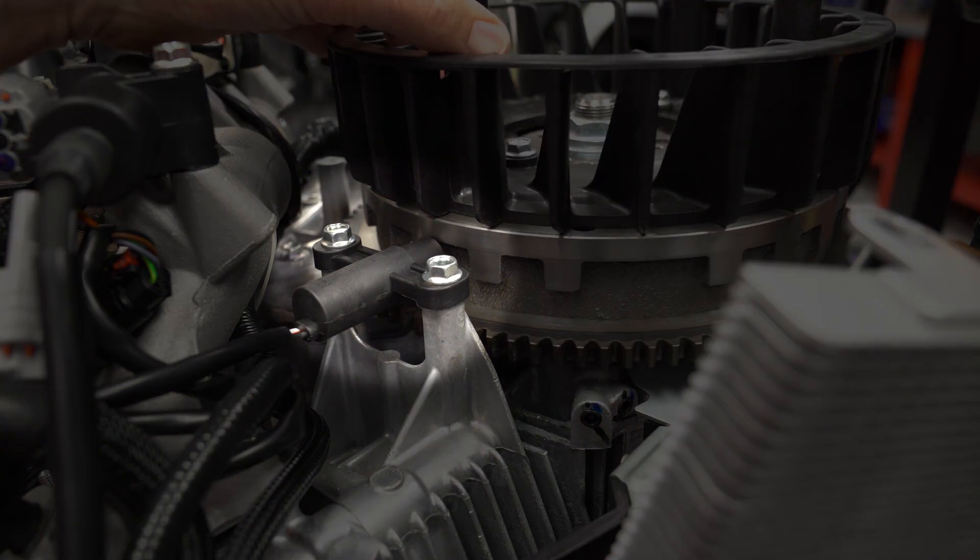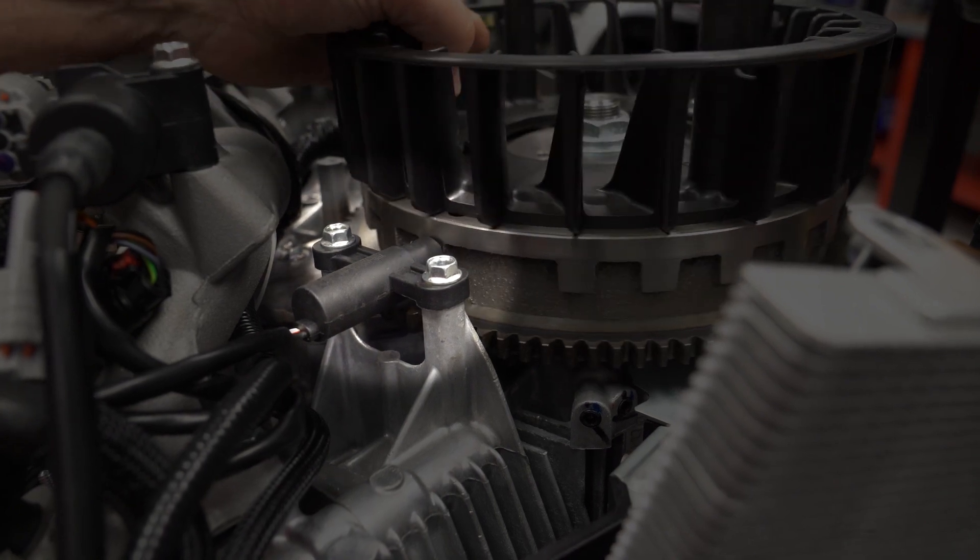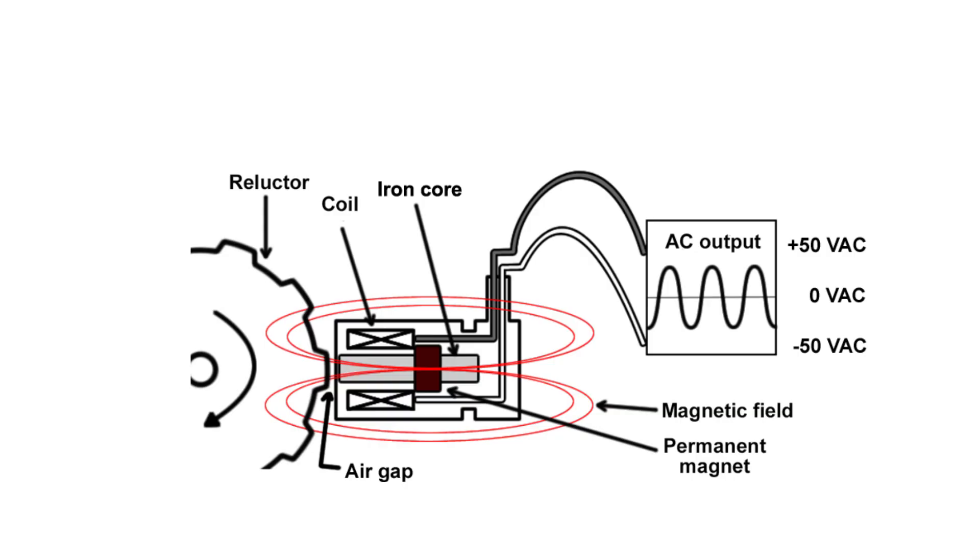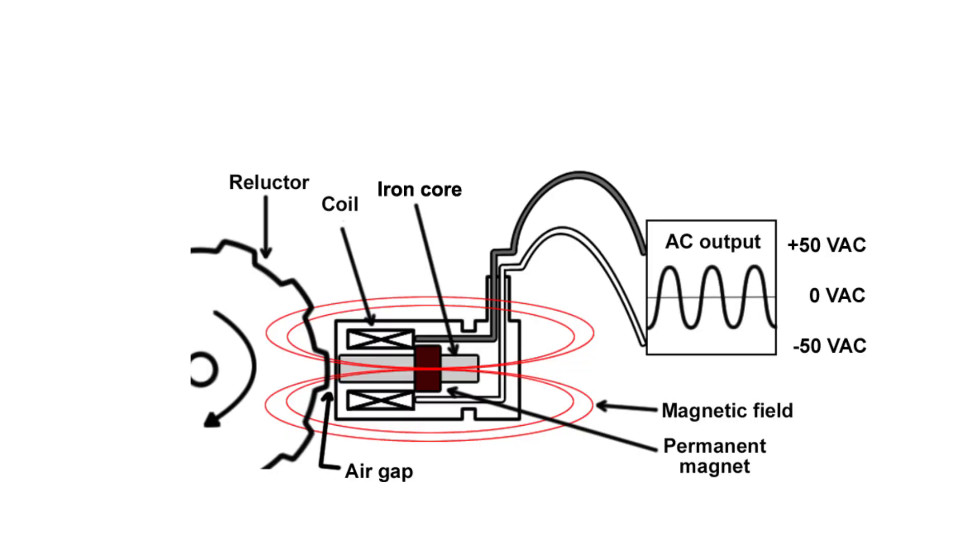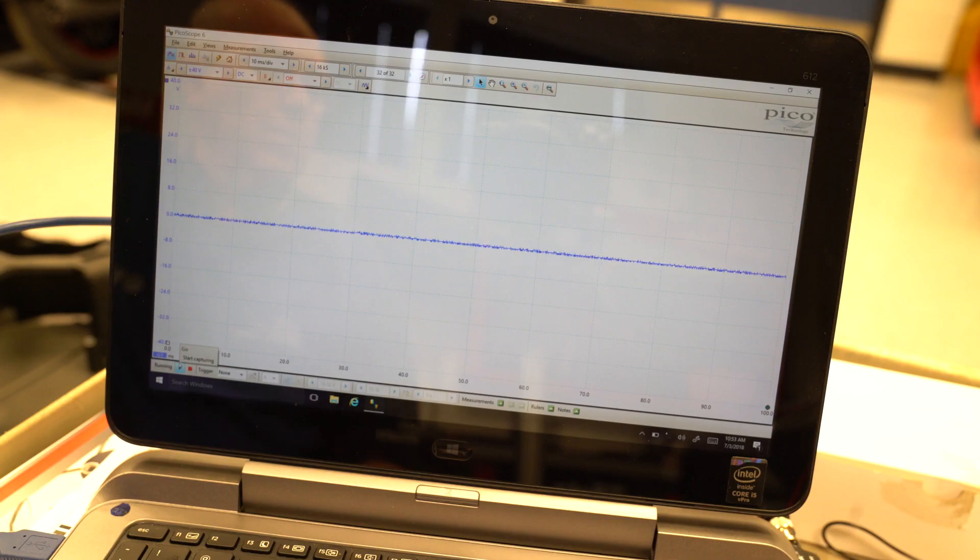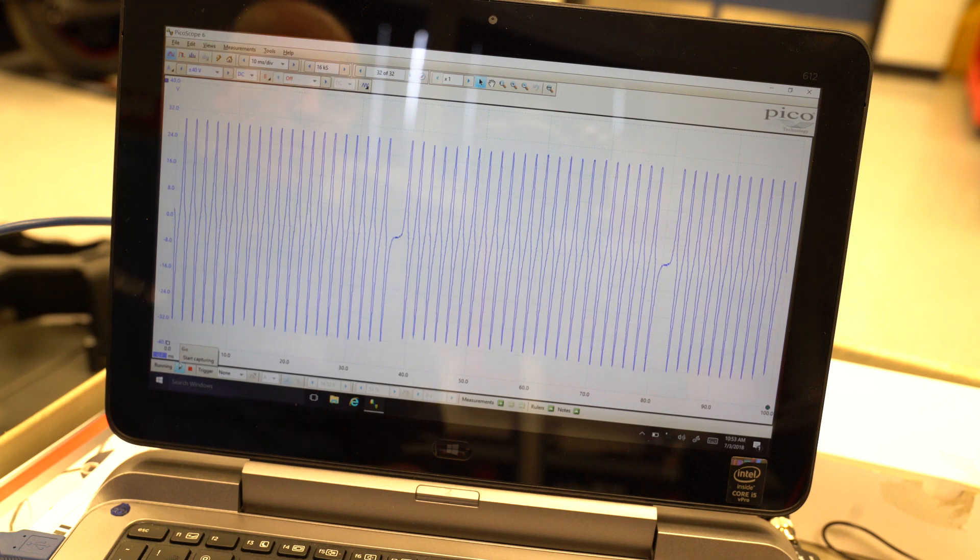The crankshaft position sensor is basically a coil of wire wrapped around a permanent magnet, mounted very close to these projections on the circumference of the flywheel, called reluctors. The magnetic field surrounds the coil. As the flywheel rotates, the reluctors interrupt this magnetic field, and the fluctuating field induces an AC voltage output.